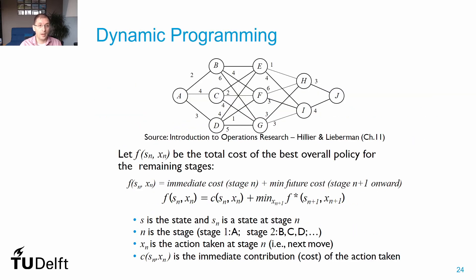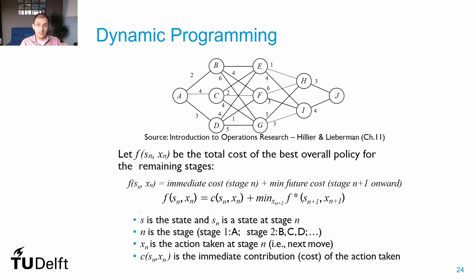To understand dynamic programming in a more tangible way, let's follow an example from the book by Hillier and Lieberman, Introduction to Operational Research. We have a network and want to find the shortest path from node A to node J. We define the reward function F, which depends on state S_n and decision X_n — the total cost of the best overall policy at a given state and decision, combining the immediate cost at stage n and the minimum future costs from stage n+1 onwards.